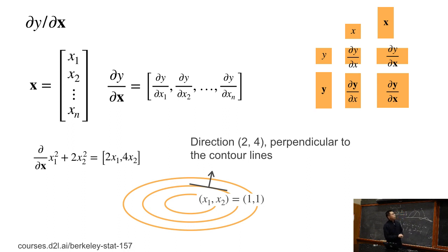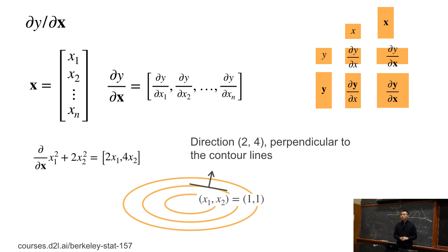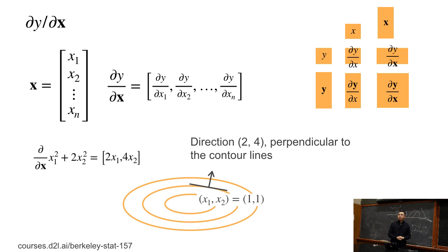The most important thing here is that the gradient is the direction in which you change the value the most. At the point x1 equals 1, x2 equals 1, we have a gradient of [2, 4], which is perpendicular to the contour line. Moving along this gradient increases the value of y. To decrease y, we move along the opposite direction of the gradient — that is the fundamental concept behind gradient descent.